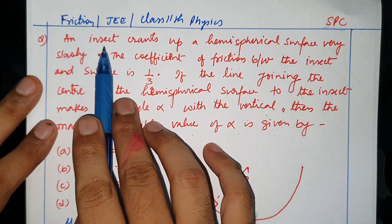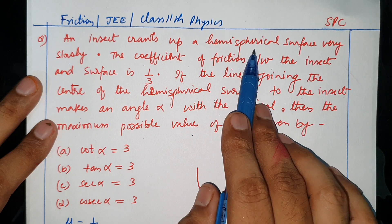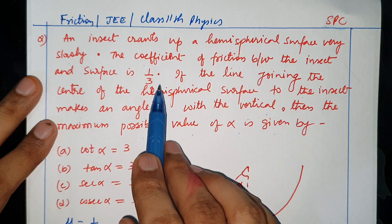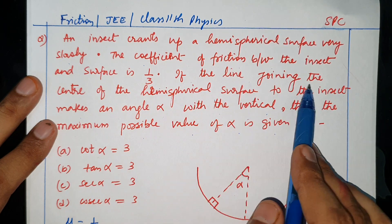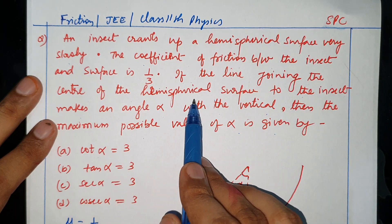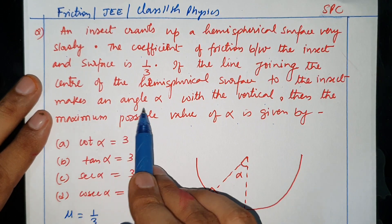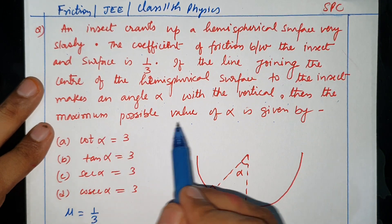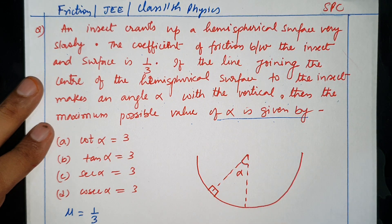An insect crawls up a hemispherical surface very slowly. The coefficient of friction between the insect and the surface is 1 by 3. If the line joining the center of the hemispherical surface to the insect makes an angle alpha with the vertical, then the maximum possible value of alpha is given by.